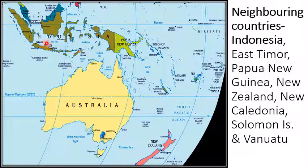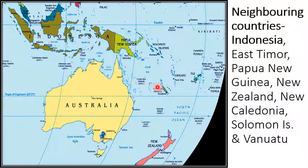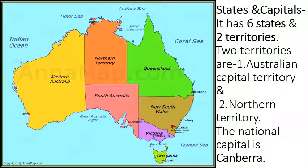The continent of Australia also shares marine territorial boundaries with its nearest neighboring countries like Indonesia, East Timor, Papua New Guinea, New Zealand, and New Caledonia, the Solomon Islands, and Vanuatu. These are island nations or island territories in the Southeast Asian and Asia-Pacific region. Australia has six states and two territories. The two territories are the Australian Capital Territory, with capital Canberra, and the Northern Territory, with capital Darwin.